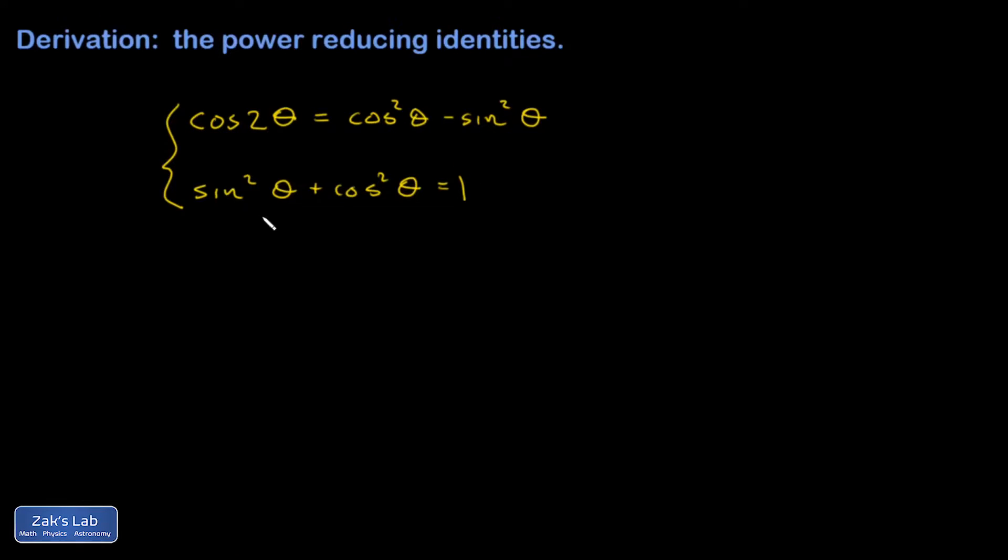Some extremely useful identities can be derived by combining these. I do recommend knowing the derivation because it increases your fluency with manipulating trig identities.